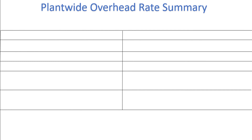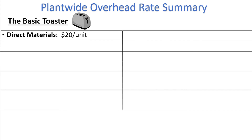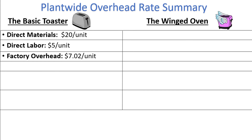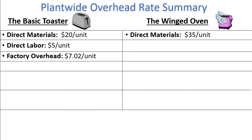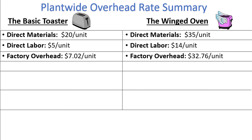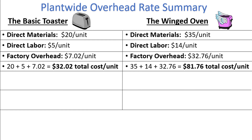The only thing left to do is calculate the total cost per unit, which means adding up the three product costs: direct materials, direct labor, and factory overhead. For the Basic Toaster: $20 direct materials + $5 direct labor + $7.02 overhead = $32.02 total cost per unit. For the Winged Oven: $35 direct materials + $14 direct labor + $32.76 overhead = $81.76 total cost per unit.